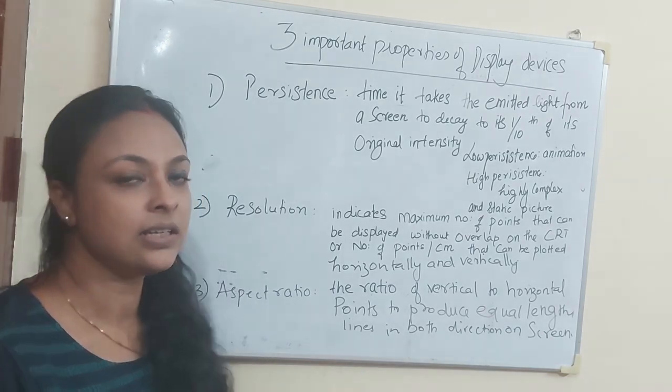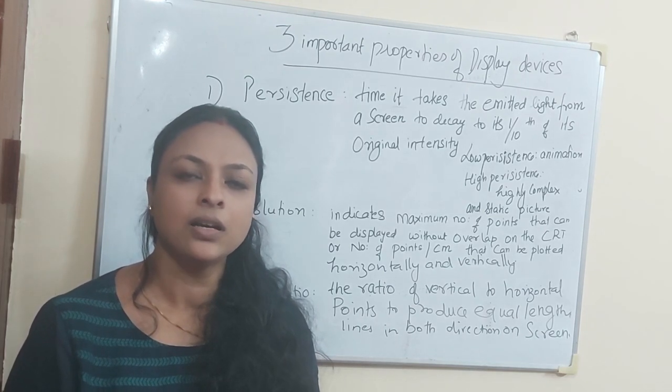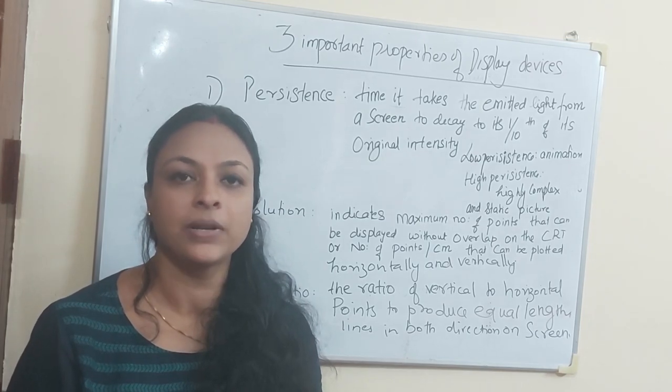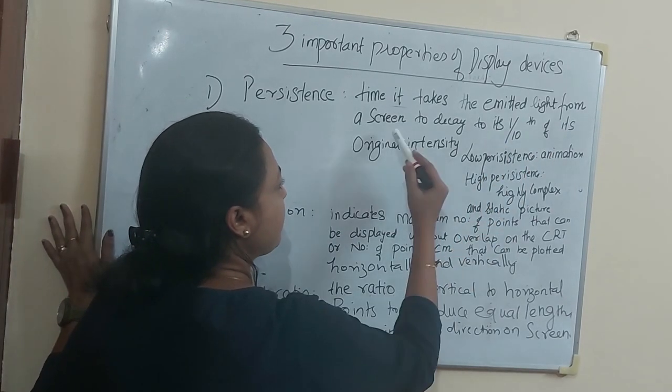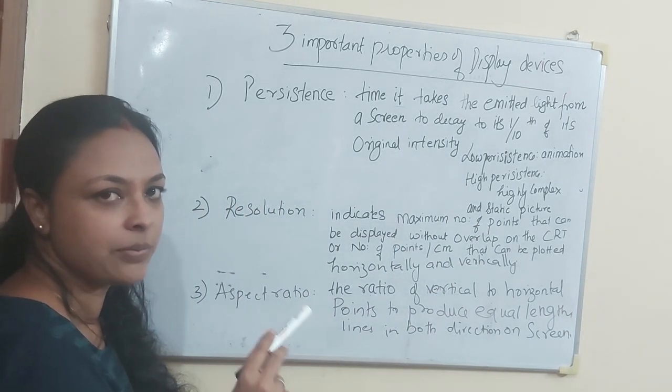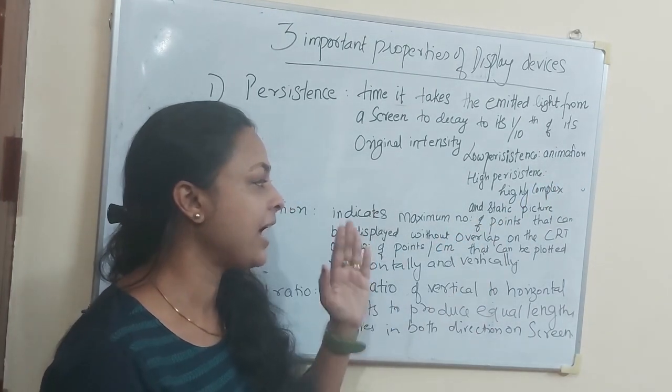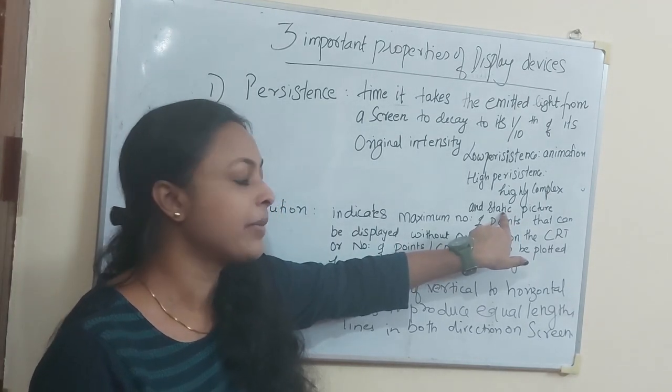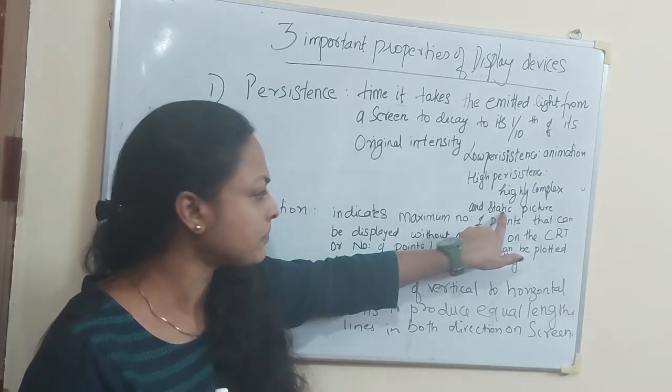The first is persistence. Persistence is the time it takes to emit light from a screen to decay. Persistence refers to how long a glow remains after the electron beam is removed. Low persistence can be used for animation and high persistence is suitable for static pictures. If we have high persistence, we can still see the picture.